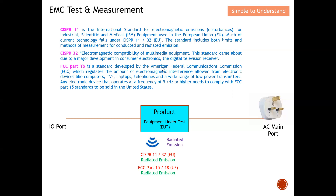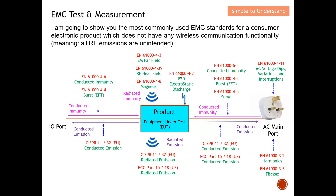FCC standards are mainly for the United States, regulated by the Federal Communications Commission (FCC). They regulate the amount of electromagnetic interference allowed from an EUT — for example, computers, laptops, televisions, and a wide range of low-power transmitters. Under FCC Part 15, any electronic device operating at a frequency of 9 kHz or higher must comply with this standard before the product can be sold in the United States.